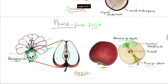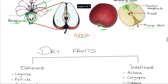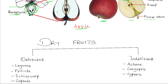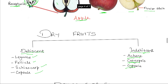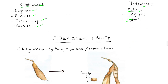Now let us turn to the dry fruits. There are two categories of dry fruits: the dehiscent — those that split on drying up, where the pericarp becomes dry at maturity and splits or dehisces releasing the seeds — and the indehiscent, which consists of fruits with dry pericarps which never split at maturity. Examples of dehiscent fruits include the legumes or pods, follicles, schizocarp, and the capsule. The indehiscent fruits include the achene, caryopsis, and the cypsela.